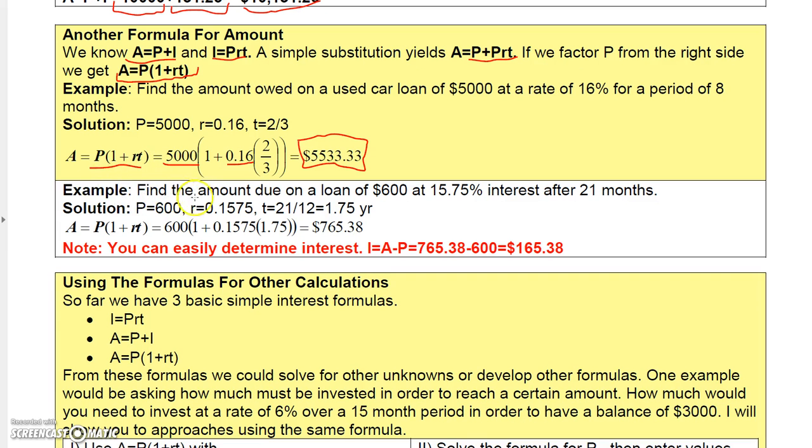Here's another example. It says find the amount due on a loan of $600 at 15.75% interest after 21 months. Well, again here, the principal is 600. The rate in decimal is 0.1575. And the time in years is 21 twelfths of a year, which is 1.75 years.